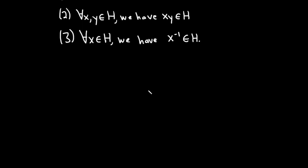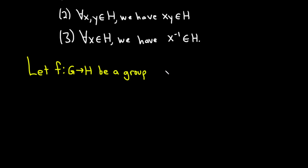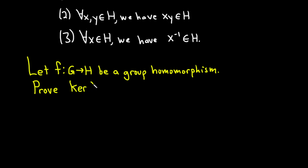So here's our setup. Let F from G into H be a group homomorphism, where G and H are groups. We're going to prove that the kernel of F — using this less-than-or-equal-to notation to denote subgroup — is a subgroup of G.